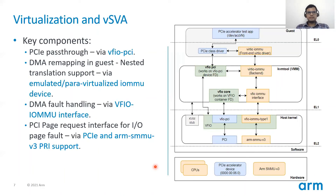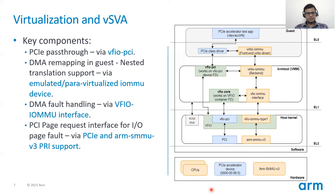Now that we understand the flow of shared virtual addressing in a host kernel environment, let's look at the virtualization use case. Virtualization is one of the key enabling technologies on various infrastructure platforms. It allows sharing resources by allowing IO virtualization as well as CPU virtualization. On the right side is a typical ARM64 software stack wherein the various software components are running at different exception levels. The PCI and SMMU v3 drivers running as part of the host kernel run at EL2 and they manage the PCI accelerator device and SMMU v3 respectively.